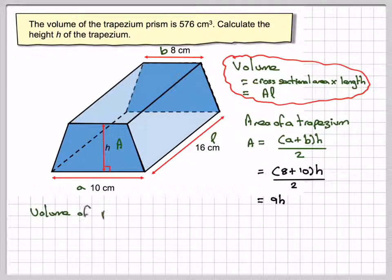So the volume of the prism is A times L. The volume of the prism is 576 centimeters cubed. So 576 is going to be equal to my value of A, which is 9H, times my length, which is 16.